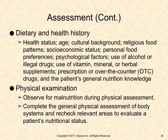A health history includes assessment of a patient's health status, age, cultural background, religious food patterns, socioeconomic status, personal food preferences, psychological factors, use of alcohol or illegal drugs, use of vitamin, mineral, or herbal supplements, prescription or over-the-counter (OTC) drugs, and the patient's general nutrition knowledge. A general physical assessment of body systems should be performed, with additional evaluation of relevant areas to assess nutritional status and observe for malnutrition.